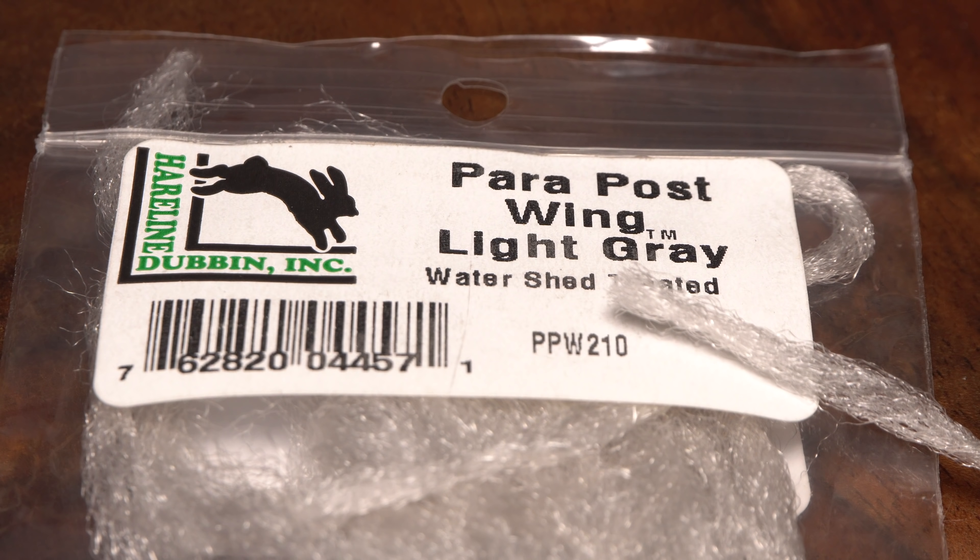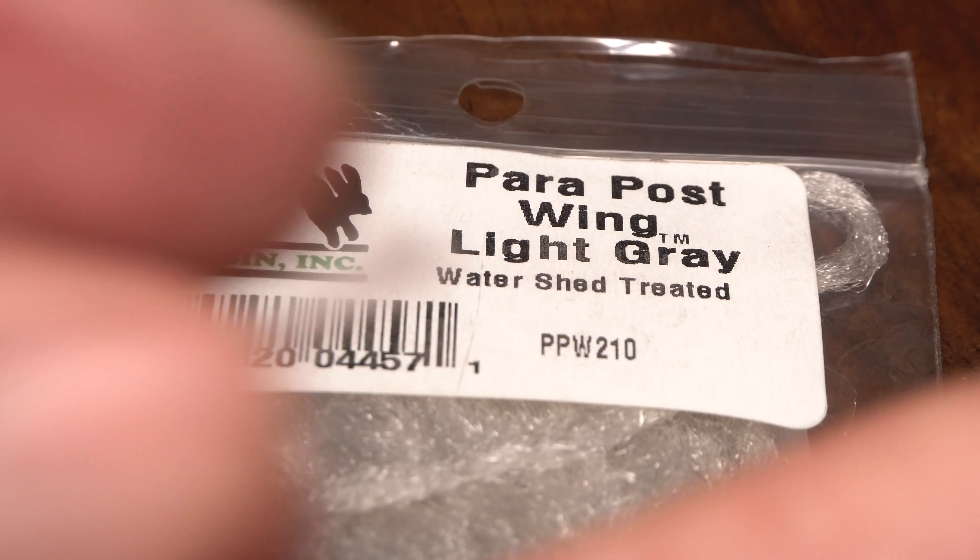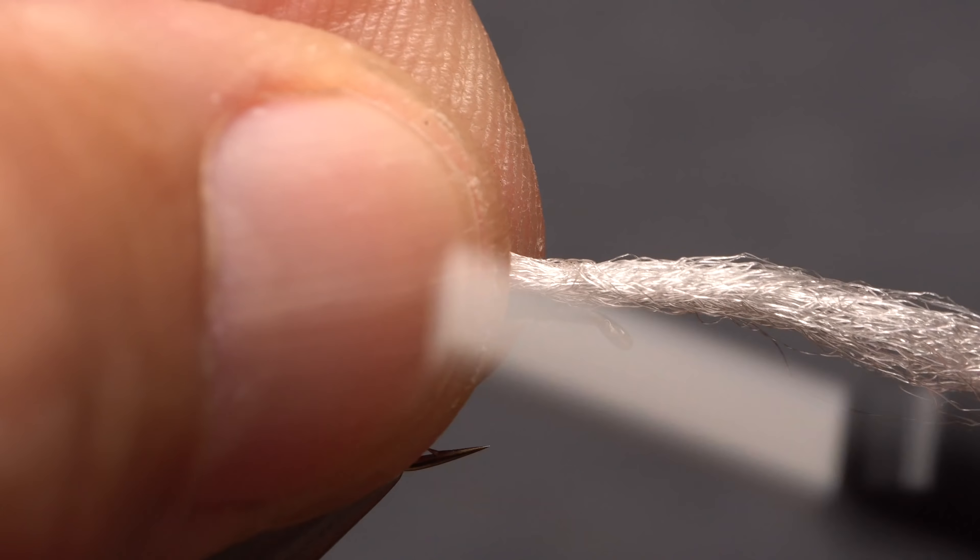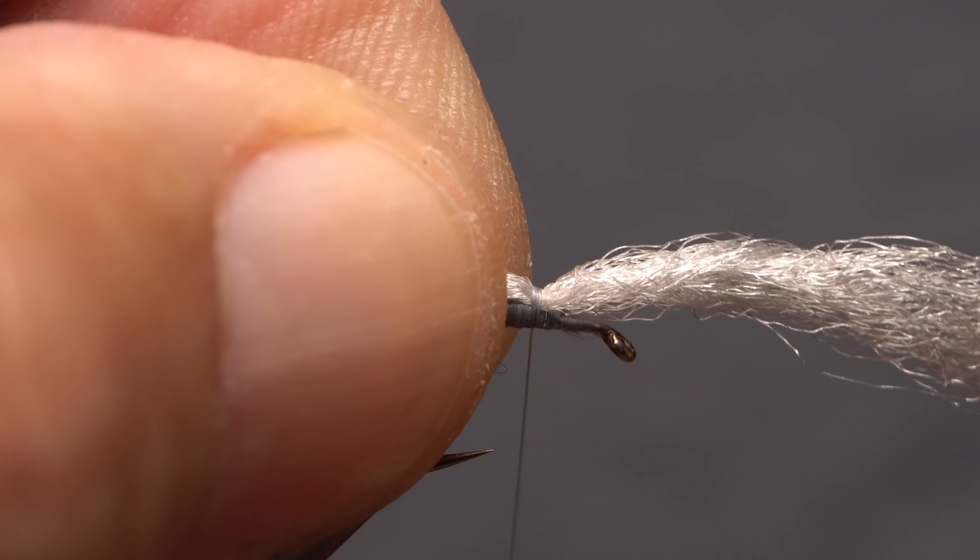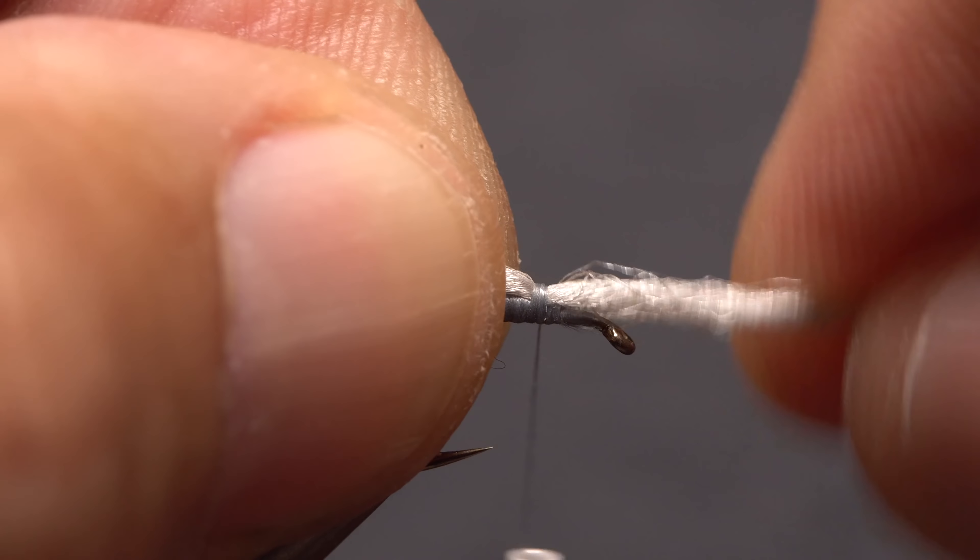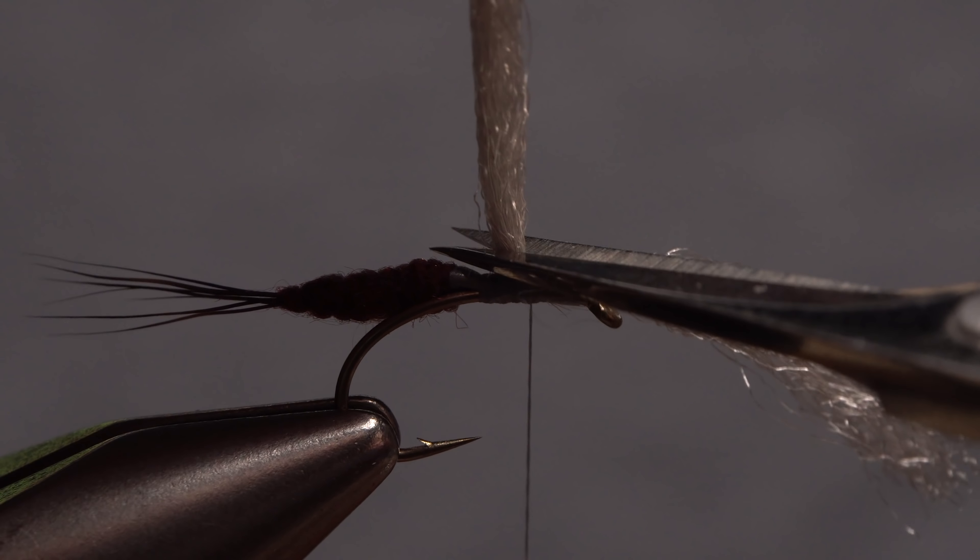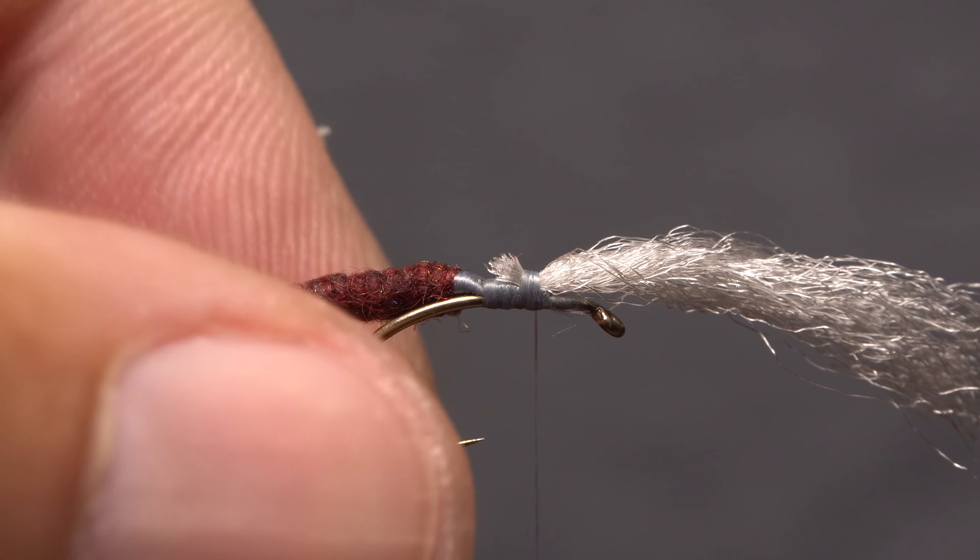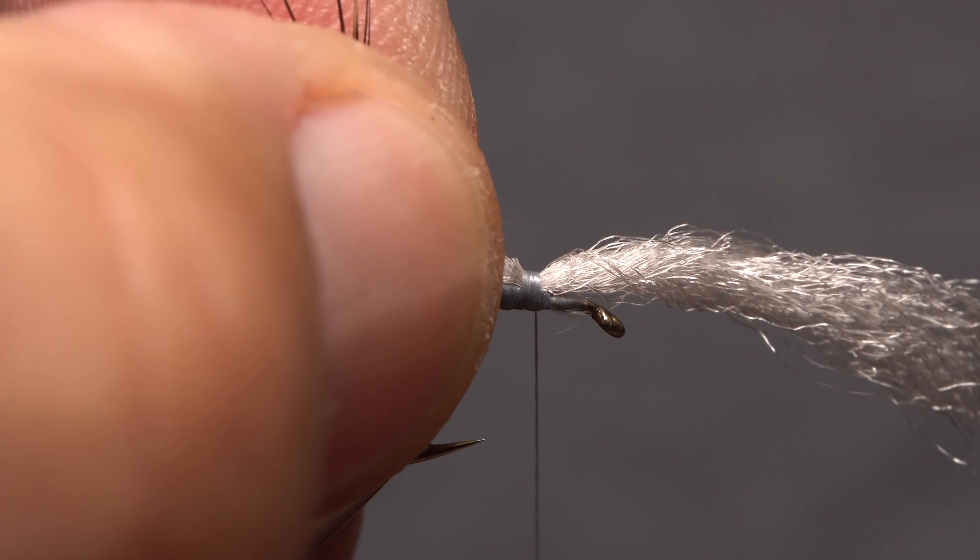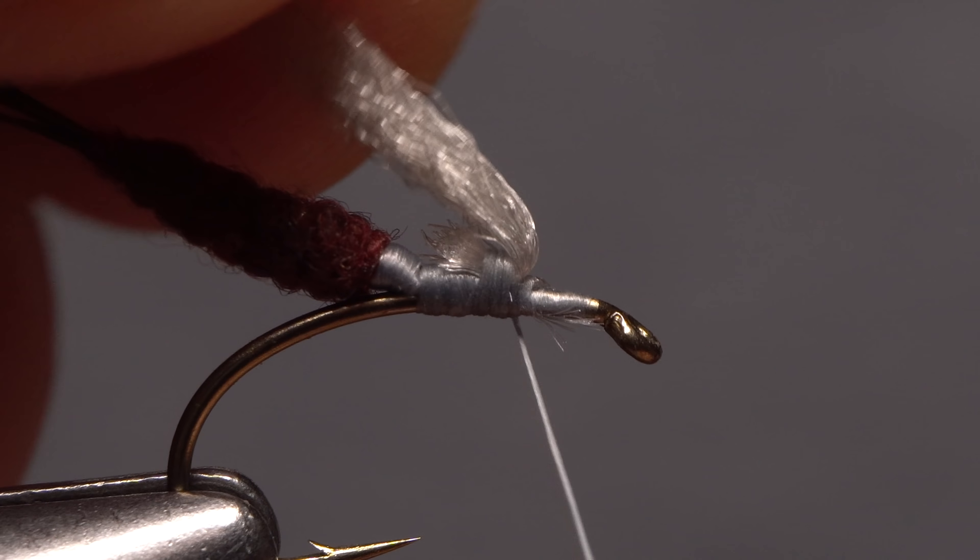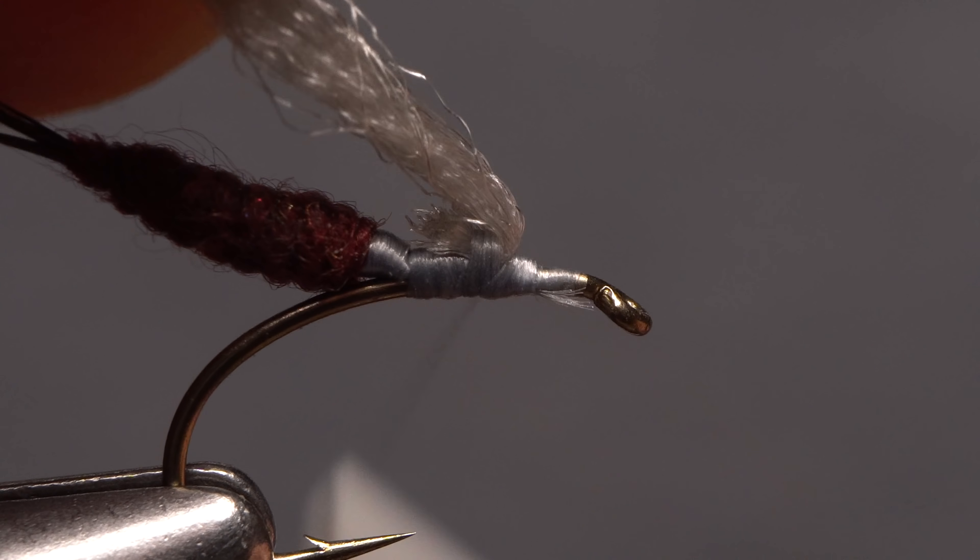Light gray parachute post wing material is used for the fly's post. Lay one end of the material on top of the hook shank and take thread wraps to secure it a few eye lengths back from the hook eye. After making sure it's bound down really well, reach in with your tying scissors and snip the excess off close.